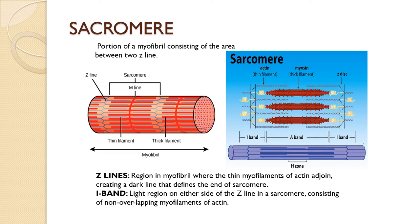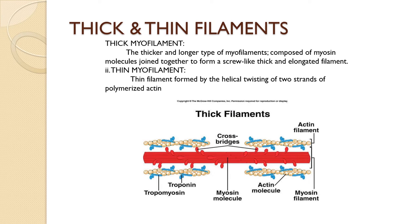As a sarcomere contracts, or when many sarcomeres contract, this is when the muscle contracts and the body moves. The thicker and longer type of myofilaments composed of myosin molecules joined together to form a screw-like thick elongated filament is known as the thick filament. The thin myofilament is formed by the helical twisting of two strands of polymerized actin. So the thick myofilament is made up of myosin while the thin myofilament is made up of actin.